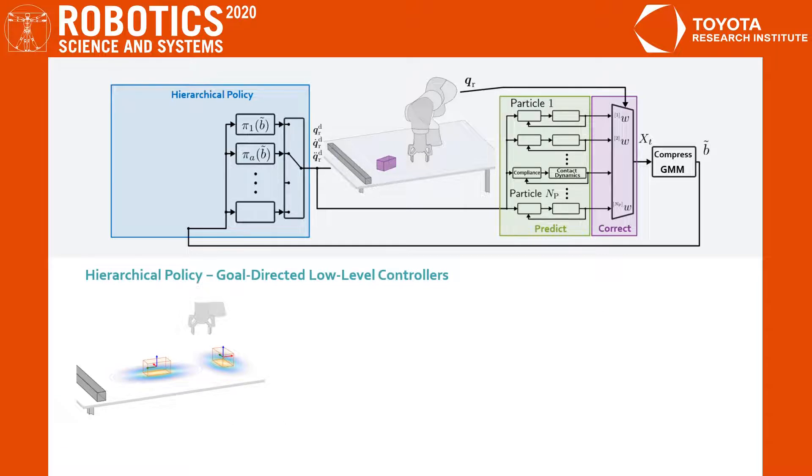Imagine the task of pushing one of the blocks from right to left. On an abstract level, the robot could move above the object to avoid collisions, then move to the right side of the object and push it to the left. The low-level controllers of our hierarchical policy are intended to provide such behaviors.